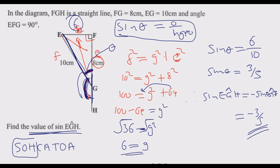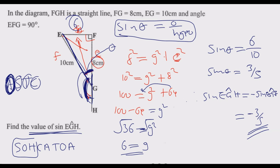This is the answer: sin(EGH) = −3/5. Remember, we use the quadrant principle — 'All Students Take Chemistry' (ASTC). In the first quadrant, all trigonometric ratios are positive. In the second quadrant, only sine is positive; in the third, only tangent; in the fourth, only cosine. Since angle EGH is in the second quadrant, the sine value carries a negative sign, giving us the negative result. That is how you answer this question to get full marks.